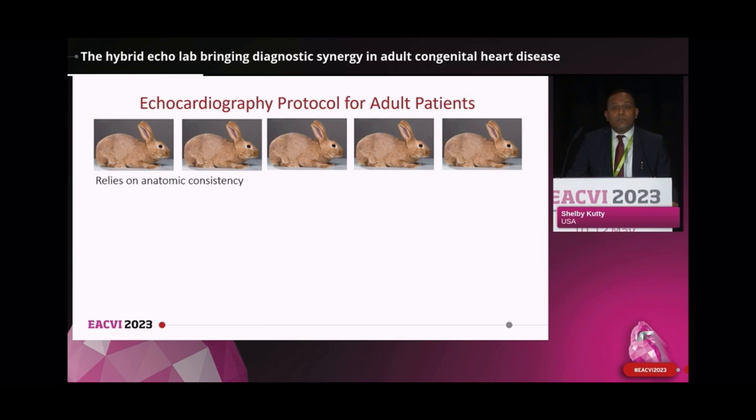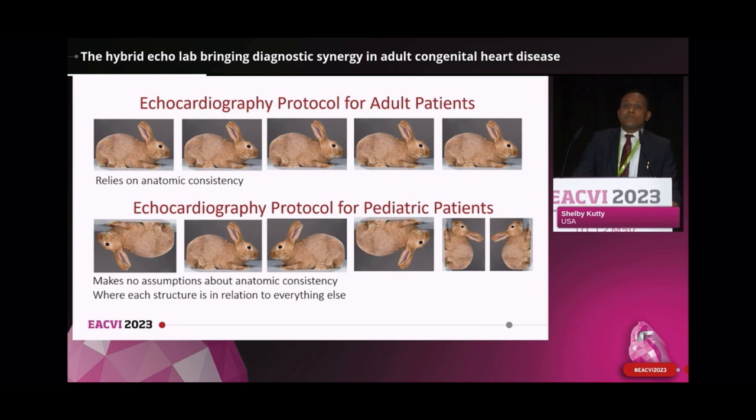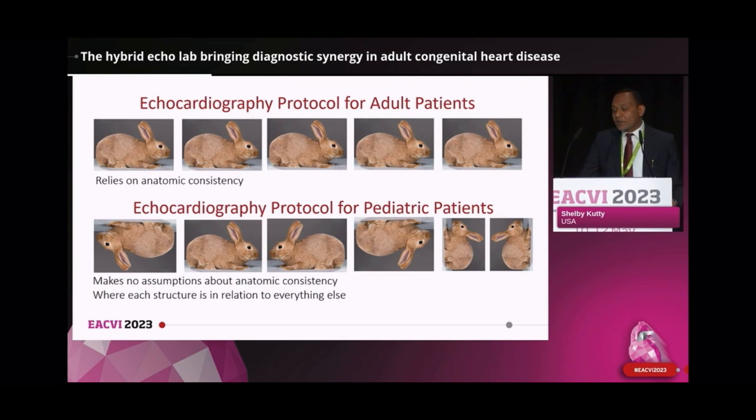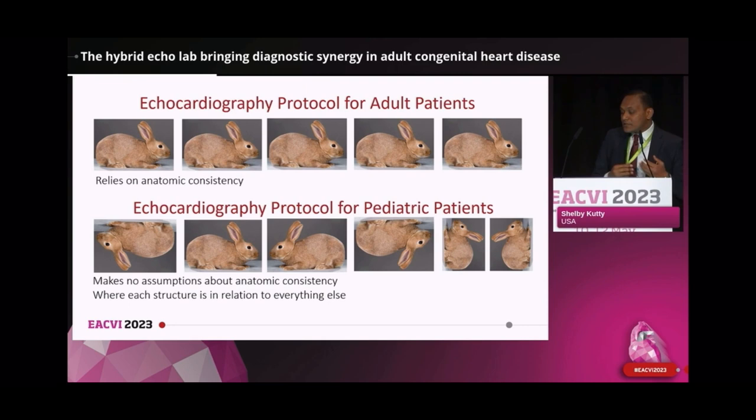Quantification and grading methods in adult echo assume anatomic consistency — all the hearts, like all the rabbits, are built and oriented in much the same way. But that's not true for pediatrics. Performance of a pediatric echo incorporates an approach designed for applicability across a wide spectrum of anomalies encountered in congenital heart disease. It makes no assumptions about anatomic consistency and always begins by asking where each structure is in relation to everything else. Echo views which would be unconventional in the adult echo lab take on added importance in this context.